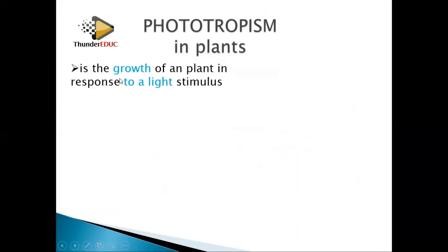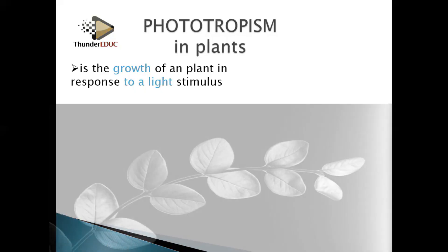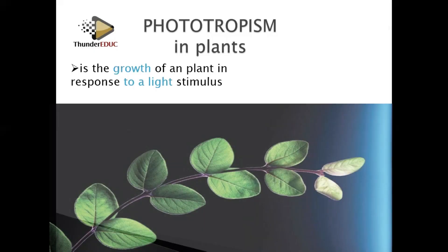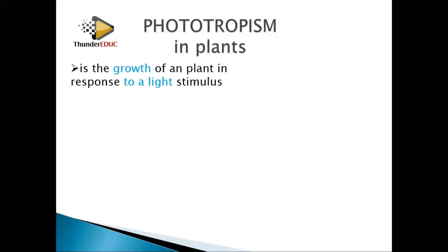Phototropism in plants is the growth of a plant in response to light. It could be positive or it could be negative. We are talking about growth of the plant — it could be a root, it could be a shoot. If it grows towards the source of light, then we say that it is positively phototropic. If it is growing away from the light, then we say that it is negatively phototropic.